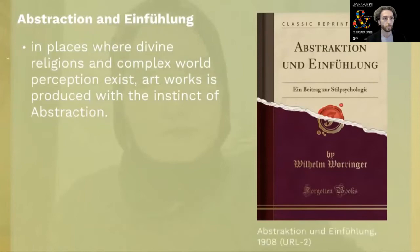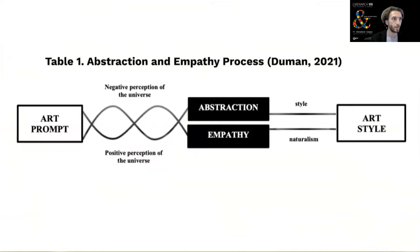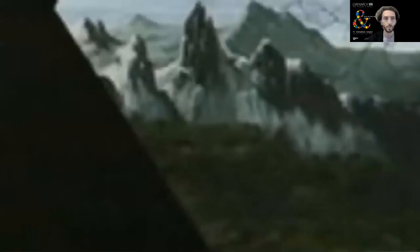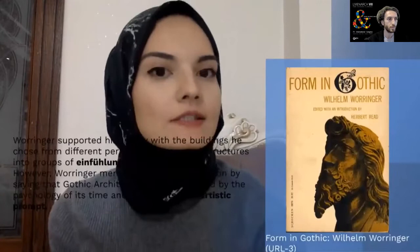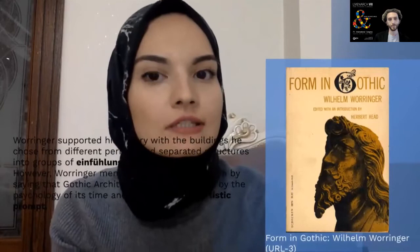These two concepts are not opposite to each other — they express two processes that can be intertwined. Therefore, the art form turns into a negative or positive perception of the universe through the impulses of abstraction and Einfühlung, and finds a way for itself with other factors, creating its own style. While this theory is suitable for arts such as sculpture and painting, it also affected architecture. Worringer supported his theory with buildings from different periods, and mentioned that Gothic architecture was influenced by the psychology of its time and created its own artistic prompt.